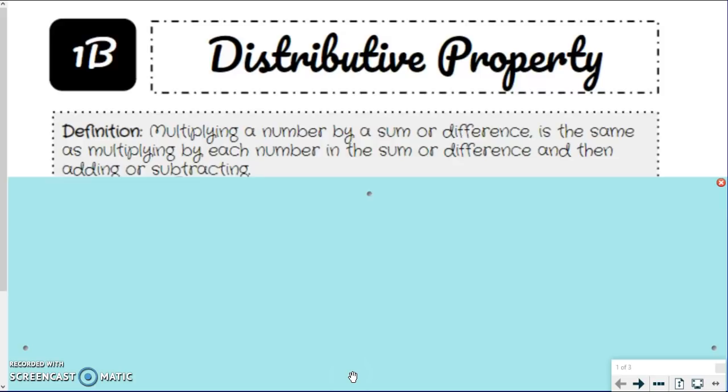It's called the distributive property, and I'm going to read the definition, but it's really hard to understand until you see some examples. So it says multiplying a number by a sum or difference - so this is only with adding and subtracting, but also uses multiplication - is the same as multiplying by each number in the sum or difference, and then adding or subtracting.